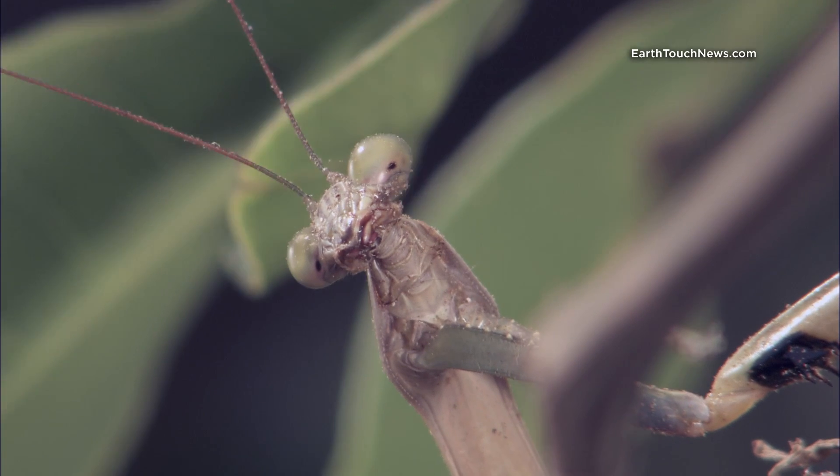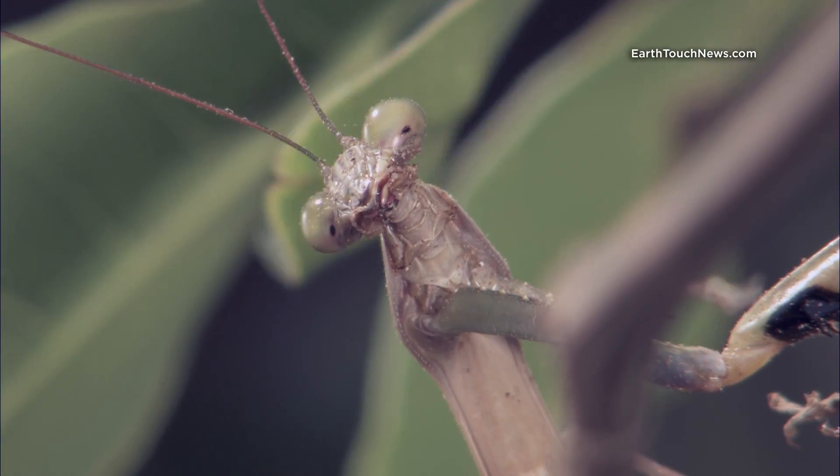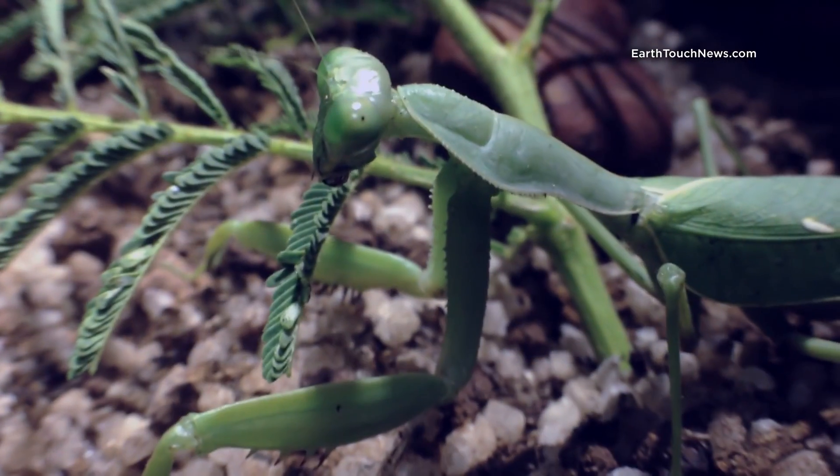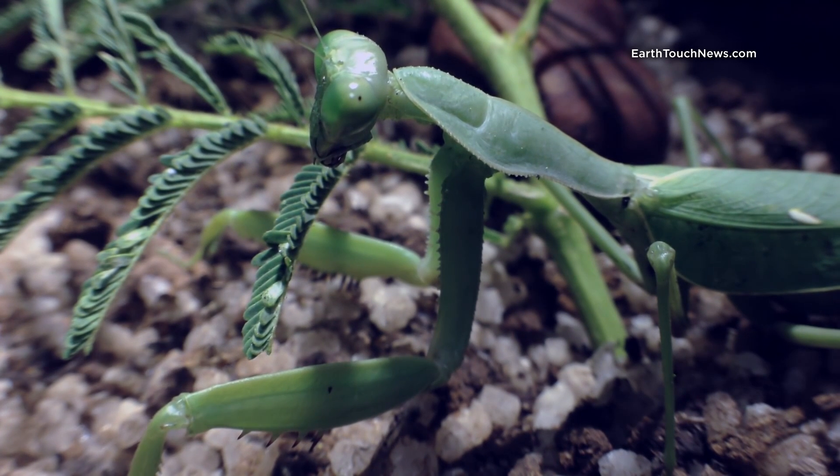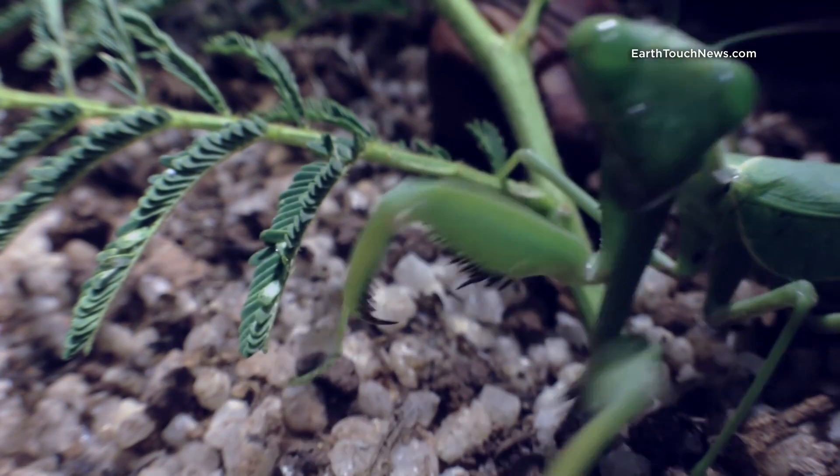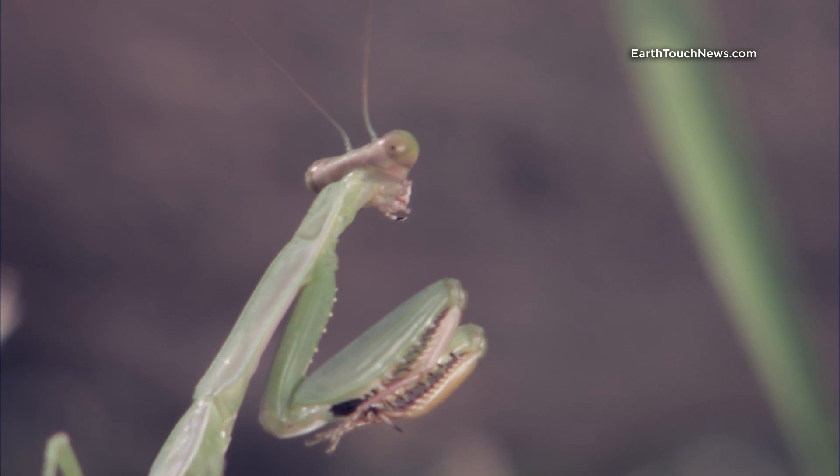To other insects, this is the face of death. Praying mantids are apex predators in the insect world. They have voracious appetites and a taste for just about any bug that crosses their path.